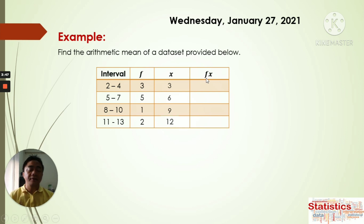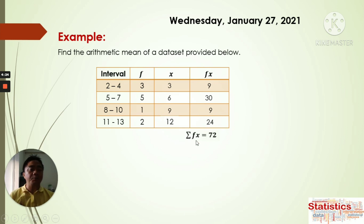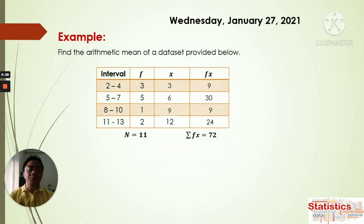Now we will get fx — the product of f times x. So just multiply: 3 times 3 is 9. 5 times 6 is 30. 1 times 9 is 9. And 2 times 12 is 24. We need the sigma — the sum of the products of f and x. So adding all of these: 9 plus 30 plus 9 plus 24 gives us 72. That is the sum of the product fx, which is 72. We also need the total number of data — the total frequency, which is n. n equals 11.